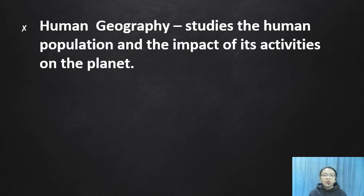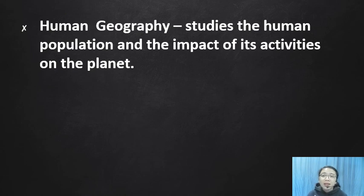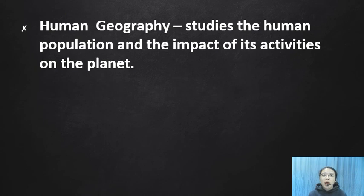After physical geography, there is human geography. Human geography studies the human population and the impact of its activities on the planet — for example, the effects of burning on our planet. That is what human geography examines.